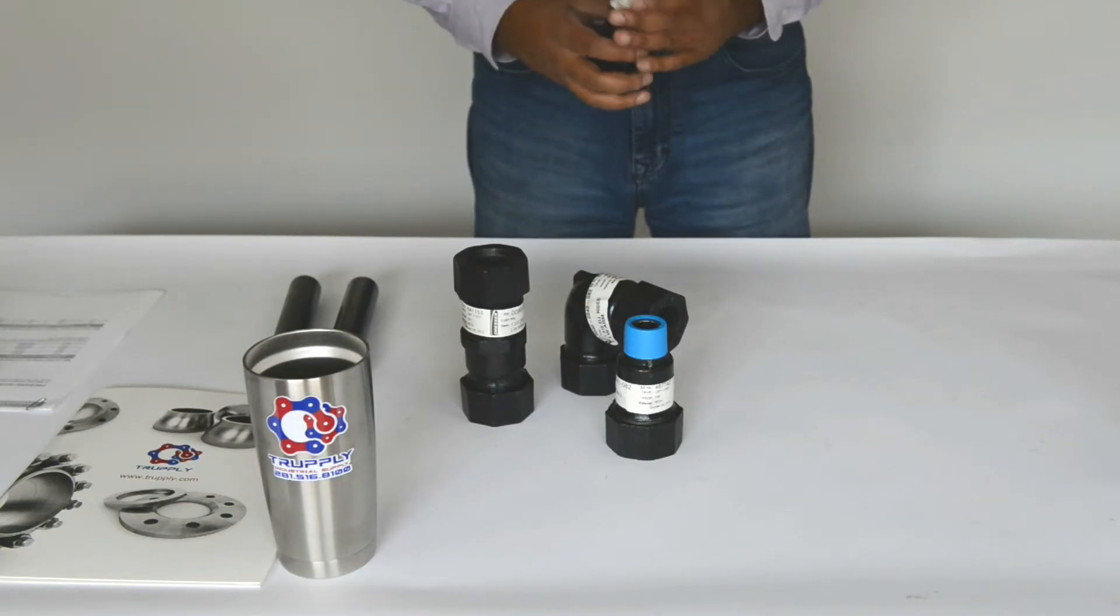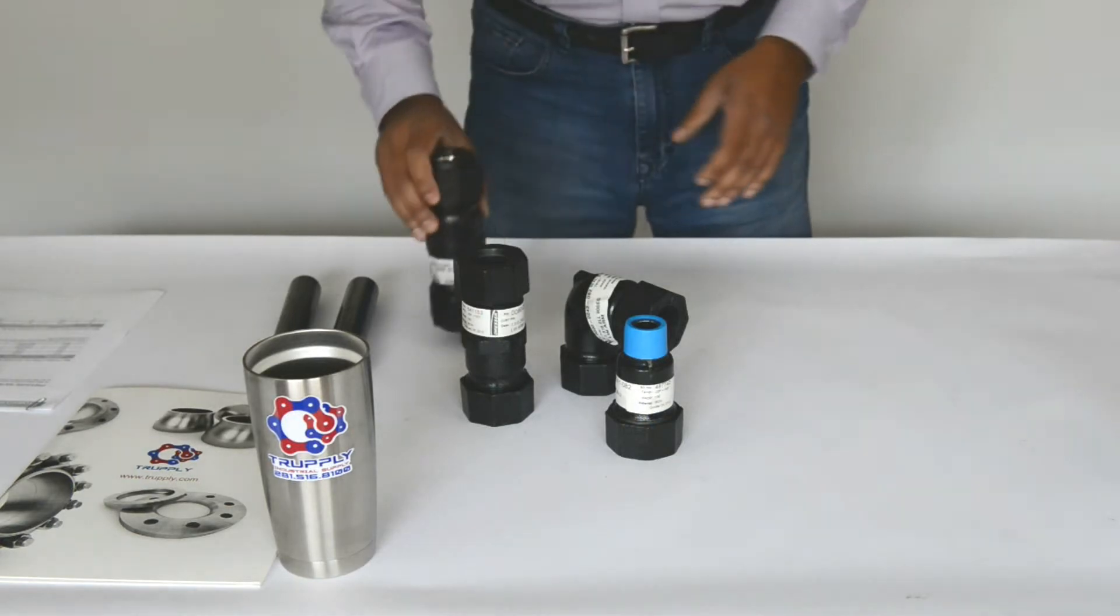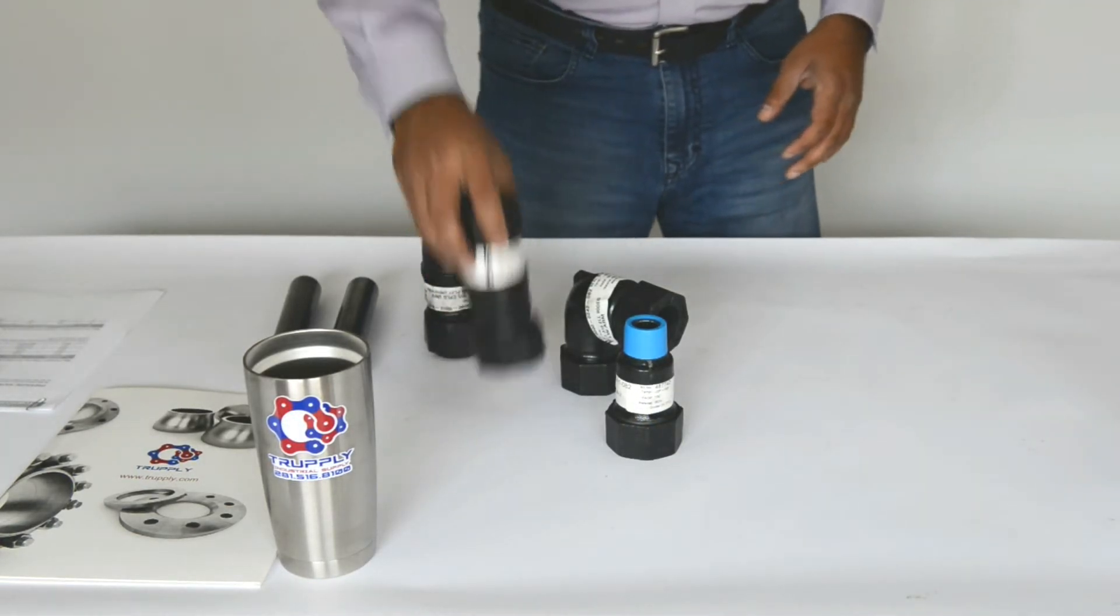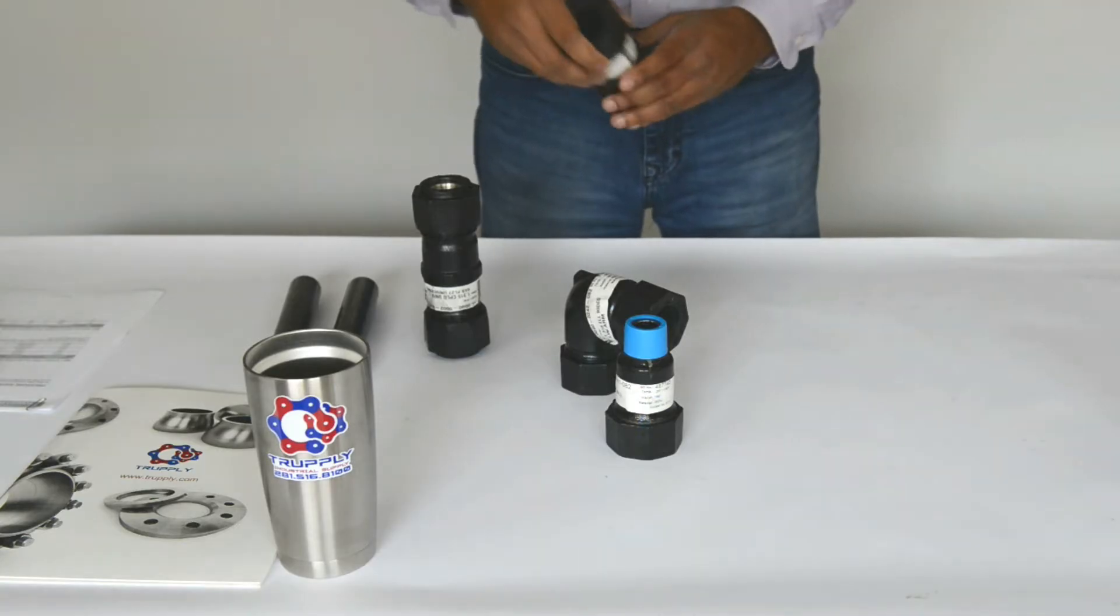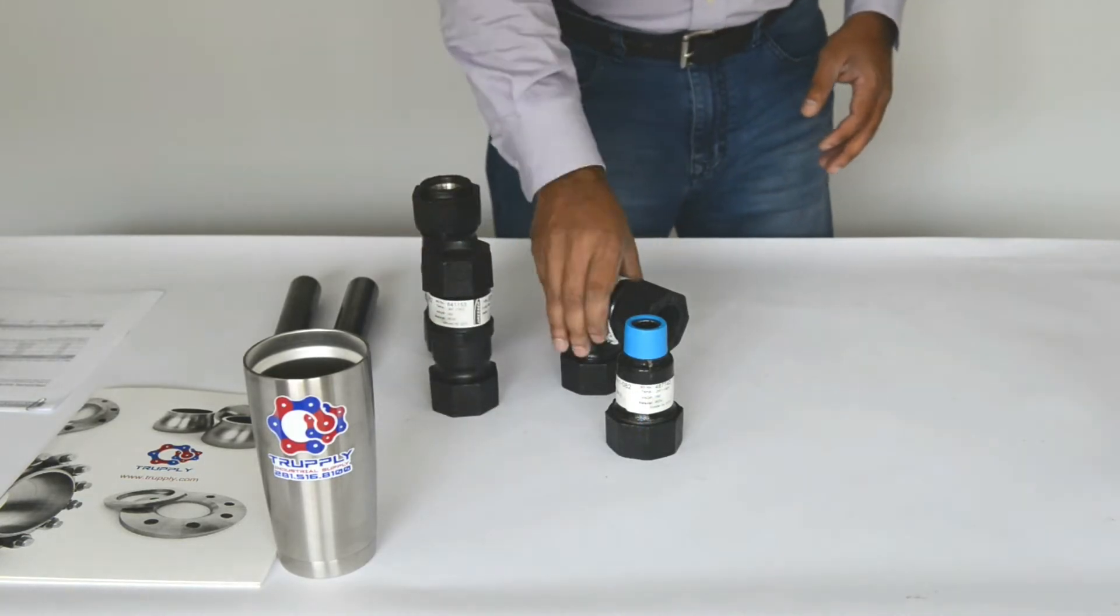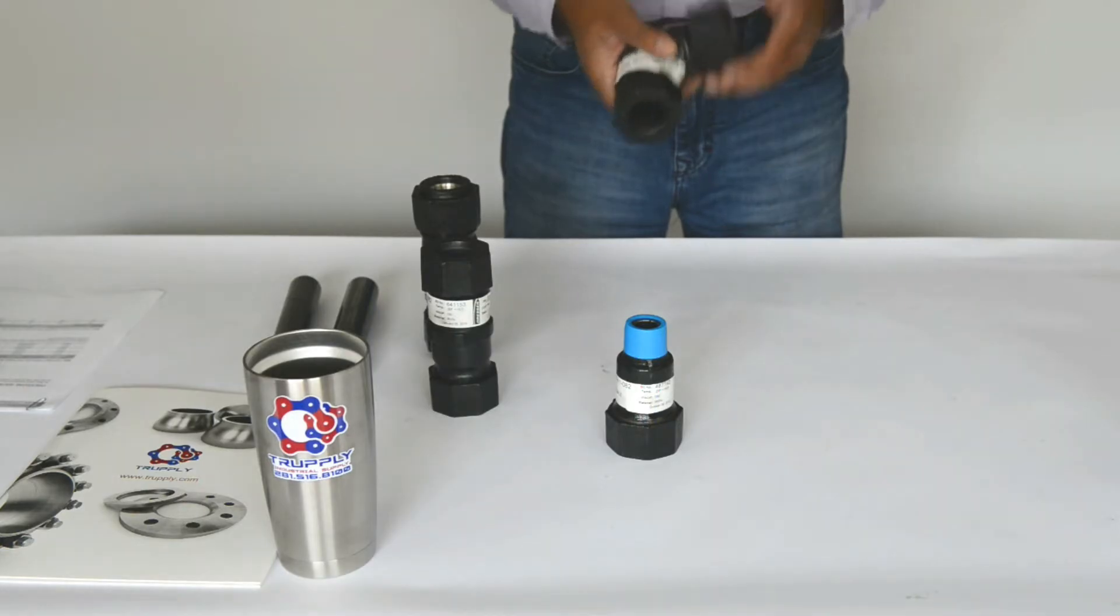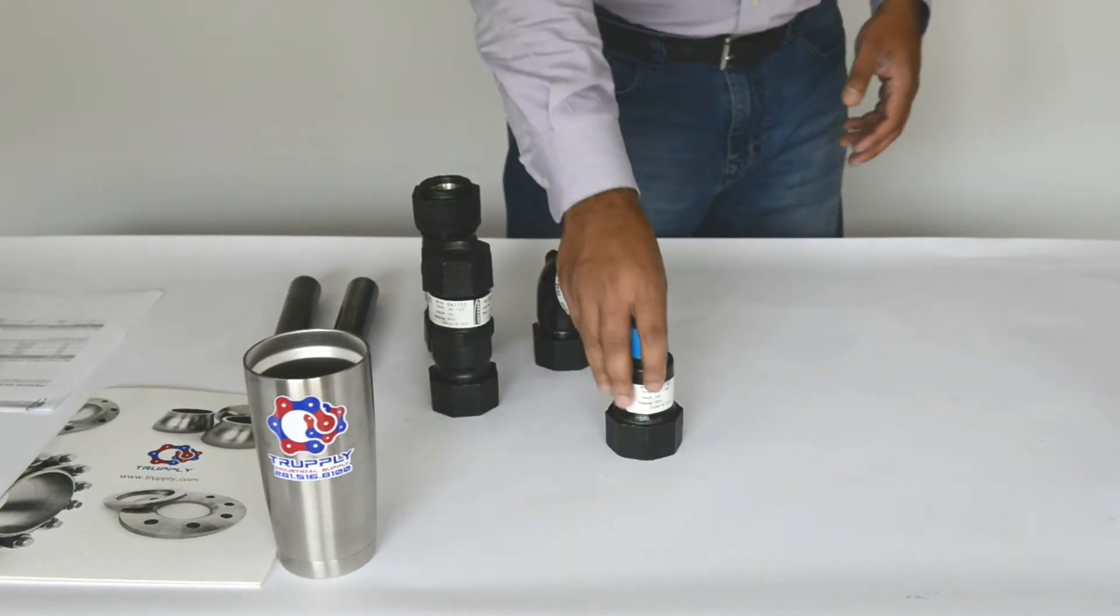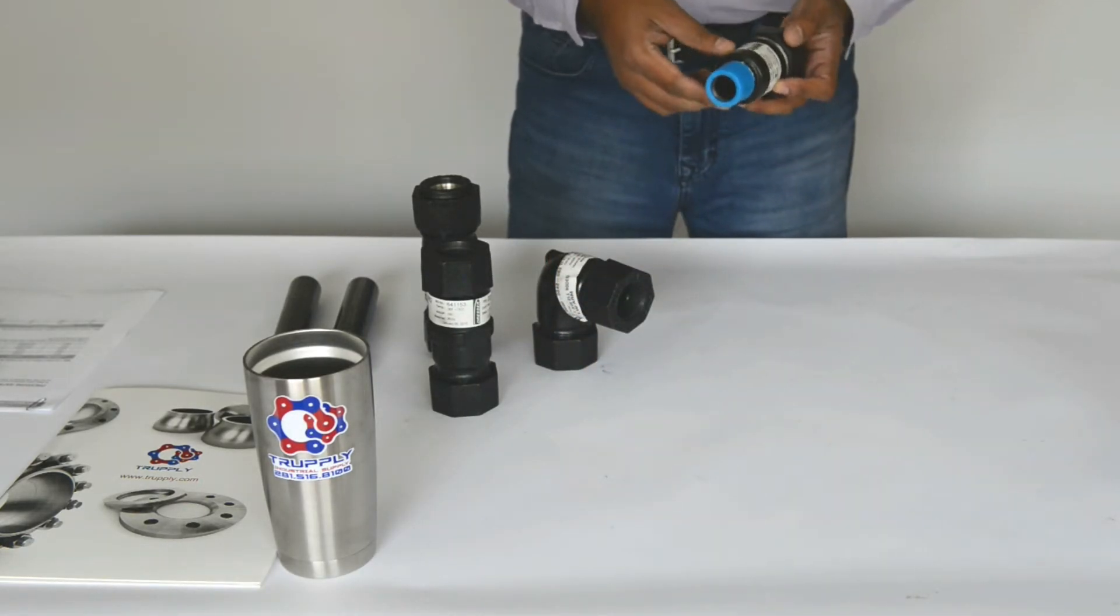This is a Style 90 universal coupling. This is a Style 90 regular coupling. This is a Style 90 compression elbow and this is a Style 90 male adapter.